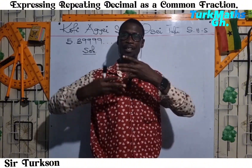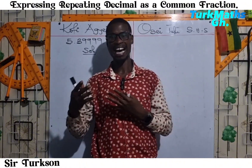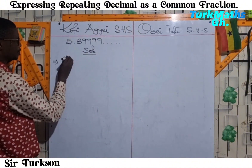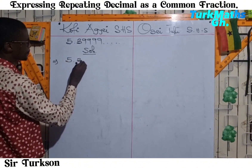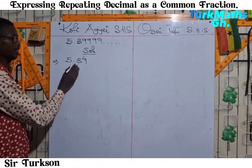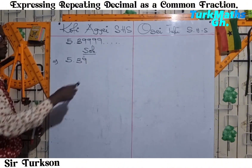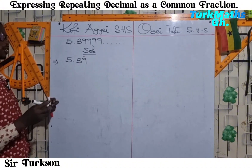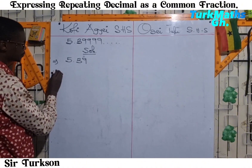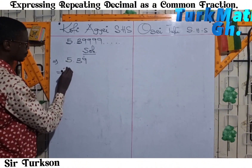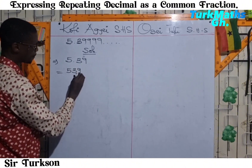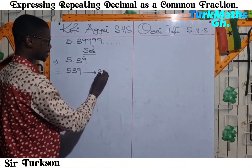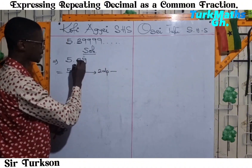Let me walk you through my method of expressing repeating decimals as a common fraction in their simplest form. I'm going to rewrite this as 5.39 with a dot over 9, which means 9 is repeating itself. The first thing I'll do is take the point from here to the right side to get a whole number. So I'm going to have 539, and how many times do I move? That is two times — I have two decimal places here.